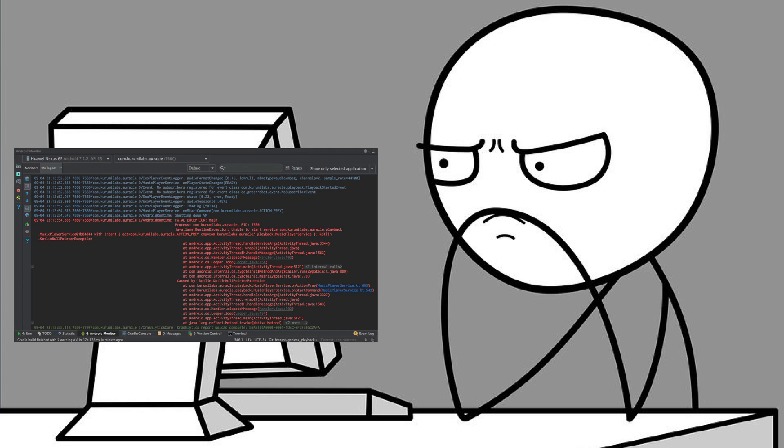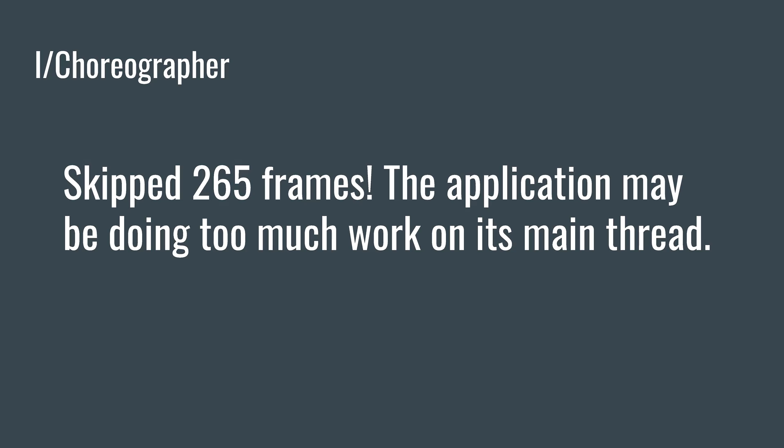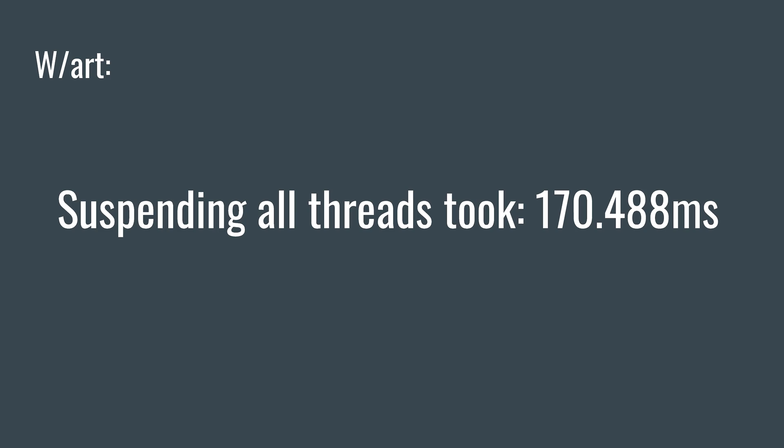My immediate reaction was to check the Logcat, to see what line of code is causing this to crash. I opened up the Logcat, and there were two incredibly unhelpful lines. The first was from the Choreographer, and it read: 'Skipped 265 frames. Your application may be doing too much work on the main thread.' The other was from ART, and it read: 'Suspending all threads took 170.488 milliseconds.' That was just another roundabout way of saying that my app was frozen.